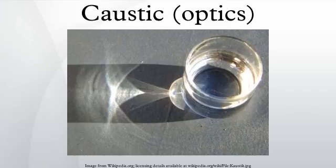In optics, a caustic or caustic network is the envelope of light rays reflected or refracted by a curved surface or object, or the projection of that envelope of rays on another surface. The caustic is a curve or surface to which each of the light rays is tangent, defining a boundary of an envelope of rays as a curve of concentrated light.